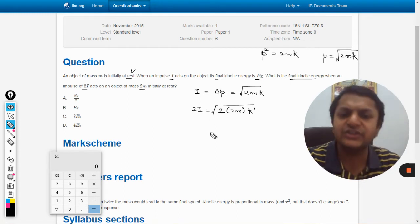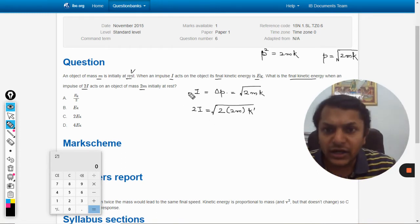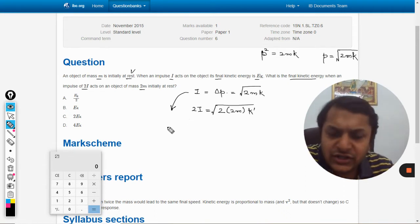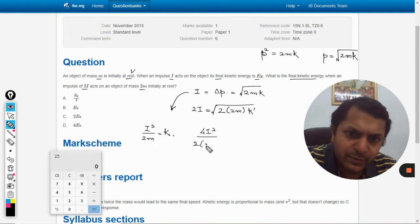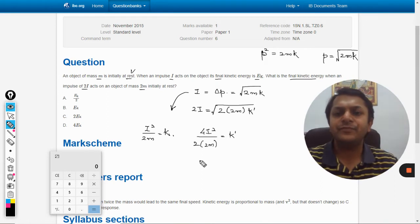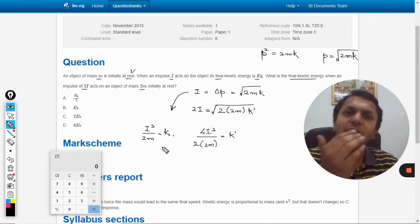From the first equation we can say i² / 2m is equal to k. Here 4i² divided by 4m will be equal to k dash. Now i² / 2m is k, so this is 2k.